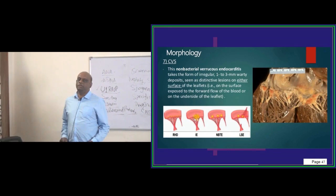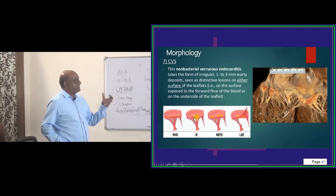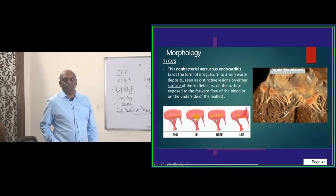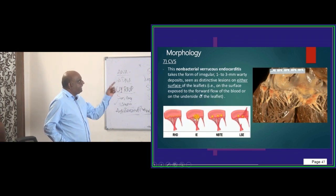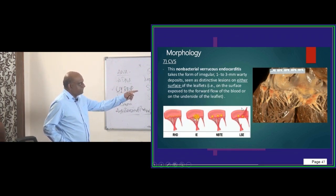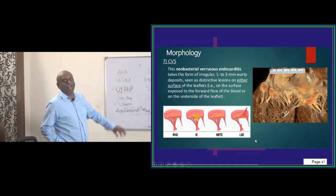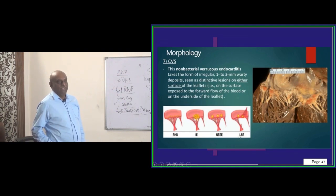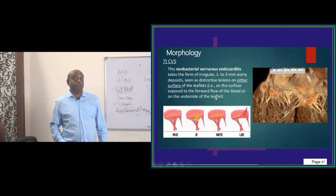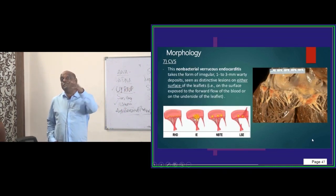Now, an interesting question: there will be non-bacterial verrucous endocarditis in lupus. What is the speciality of it? If you take the leaflet, non-bacterial verrucous endocarditis of lupus affects both the atrial side and ventricular side of the leaflet. This is the lupus endocarditis — a favorite exam question. Vegetations are present on both sides of the leaflet.